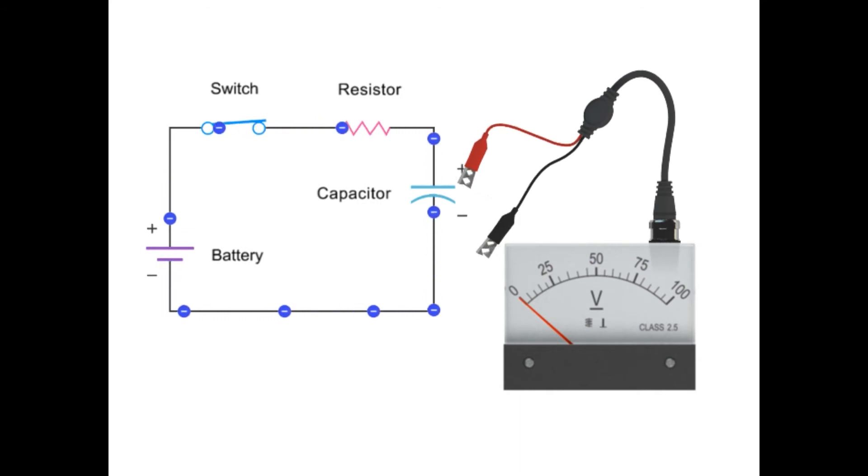Eventually, the voltage across the capacitor will equal the voltage of the source. At this point, the flow of electrons stops because the source voltage and capacitor voltage are equal but opposing each other. The capacitor is essentially charged.